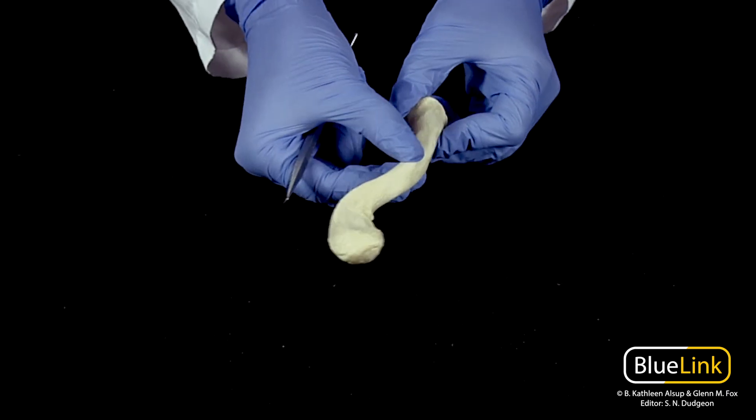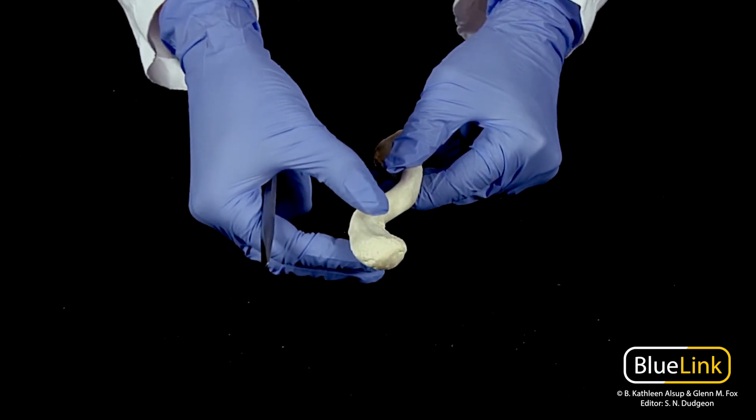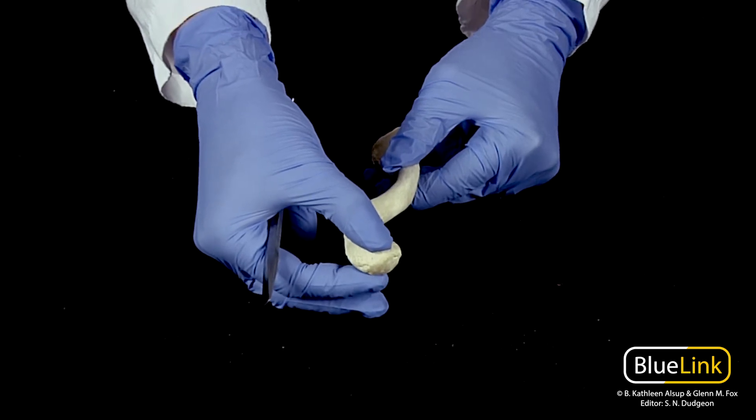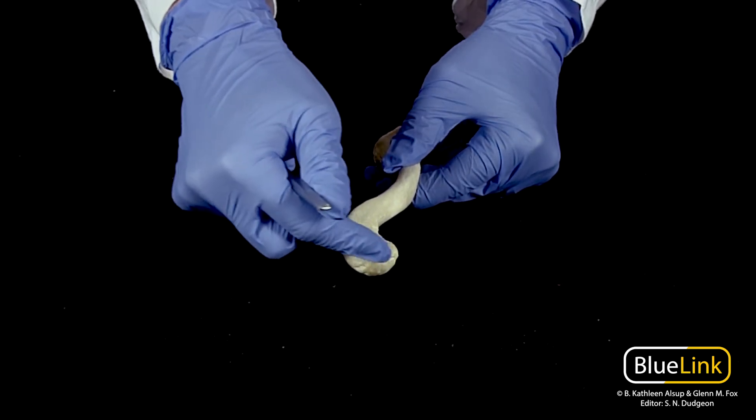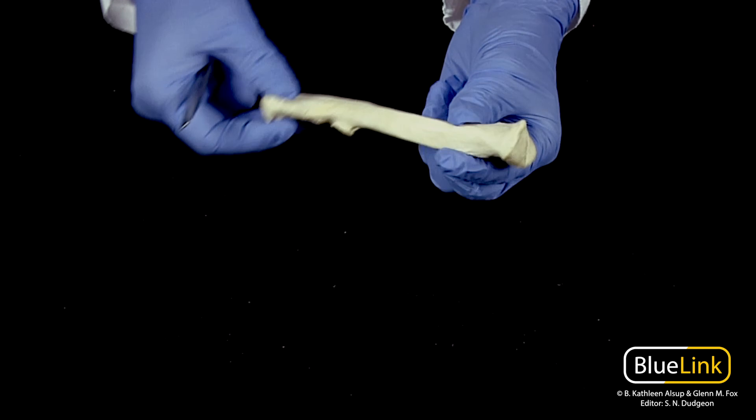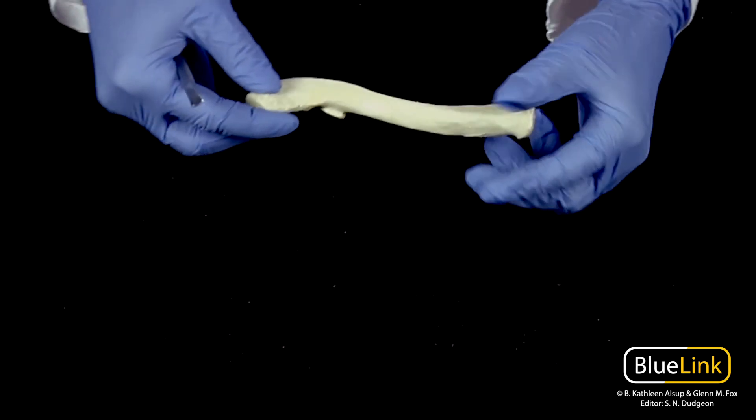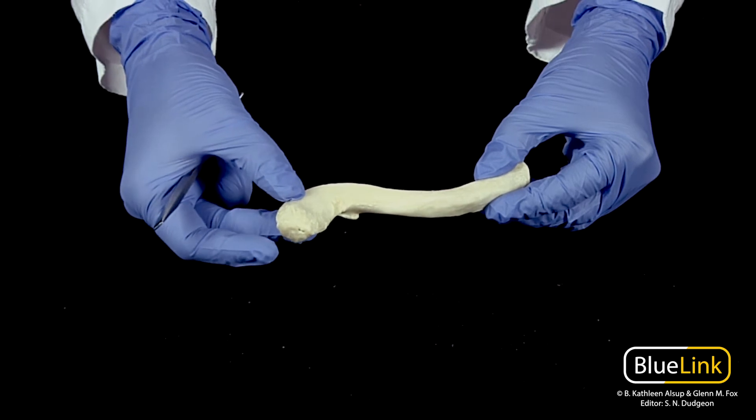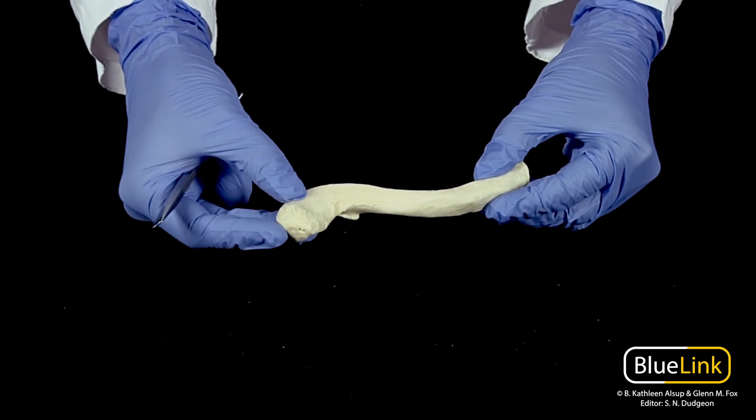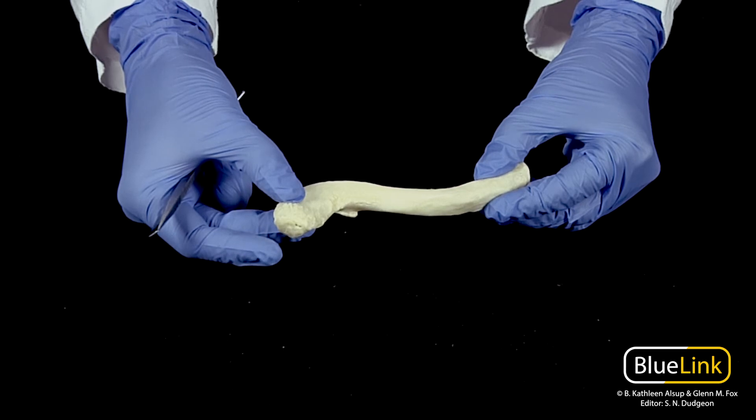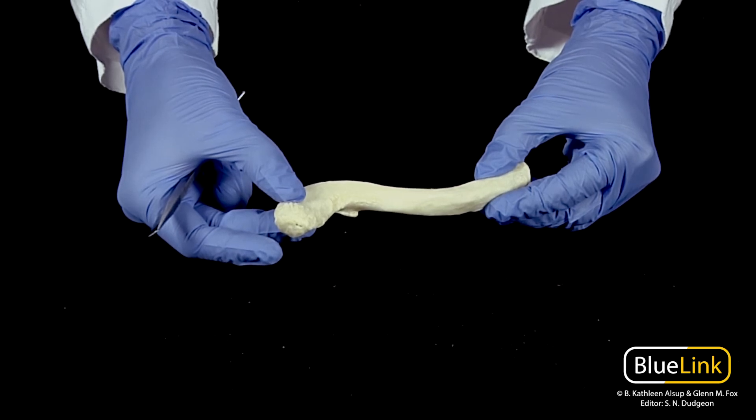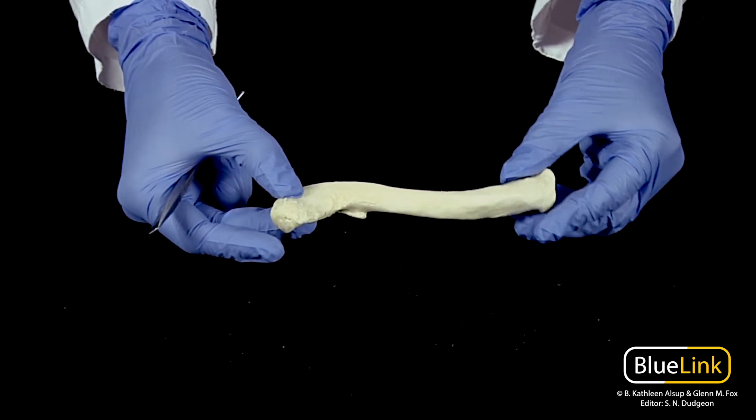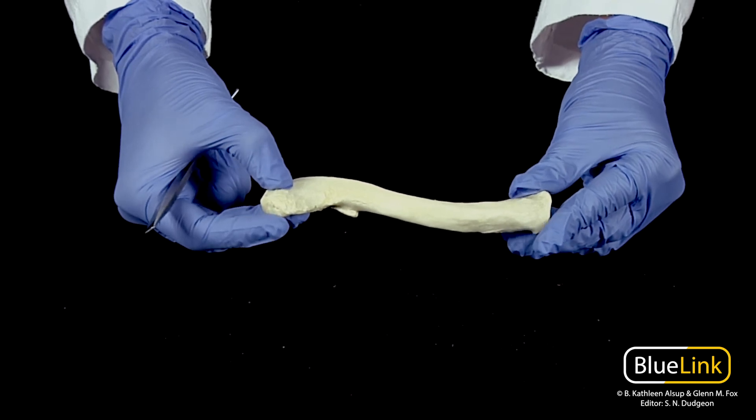Now looking at the lateral end, you see that it is distinct in that it's flattened and more tapered. It's not nearly as circular or bulbous as the medial end. This articulates with the acromion of the scapula, forming the acromioclavicular joint, which is an important joint in terms of shoulder separation. This is a type of plane synovial joint.